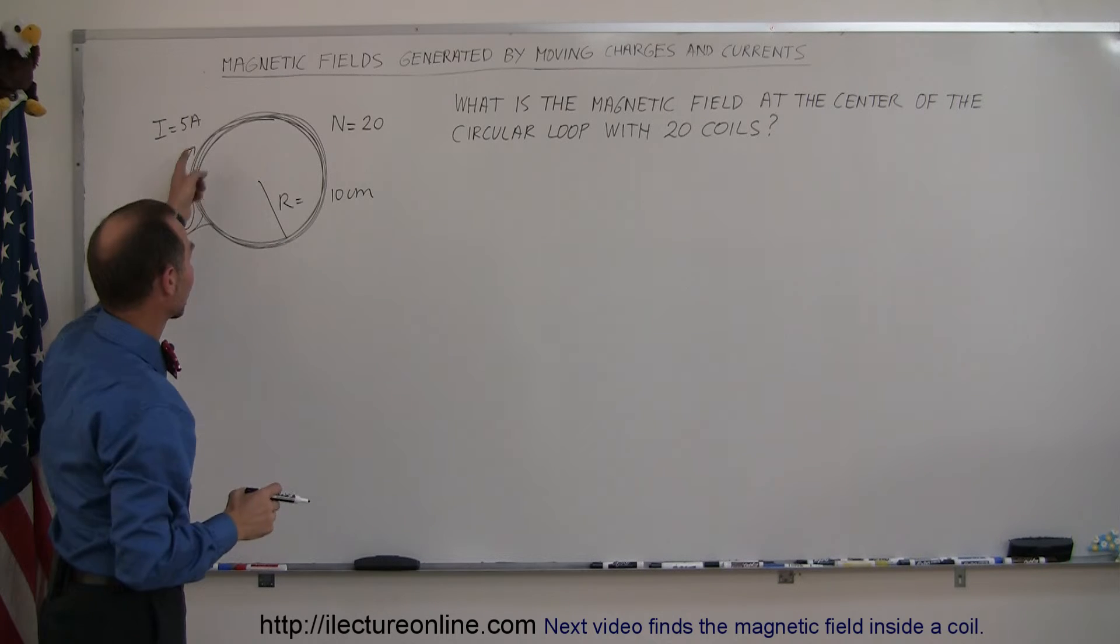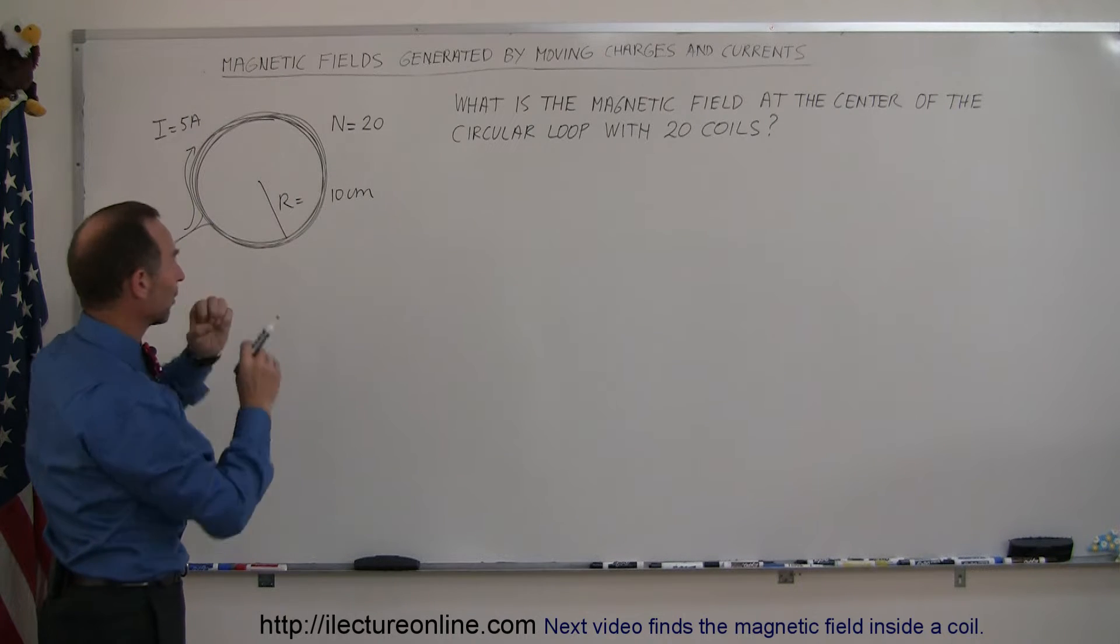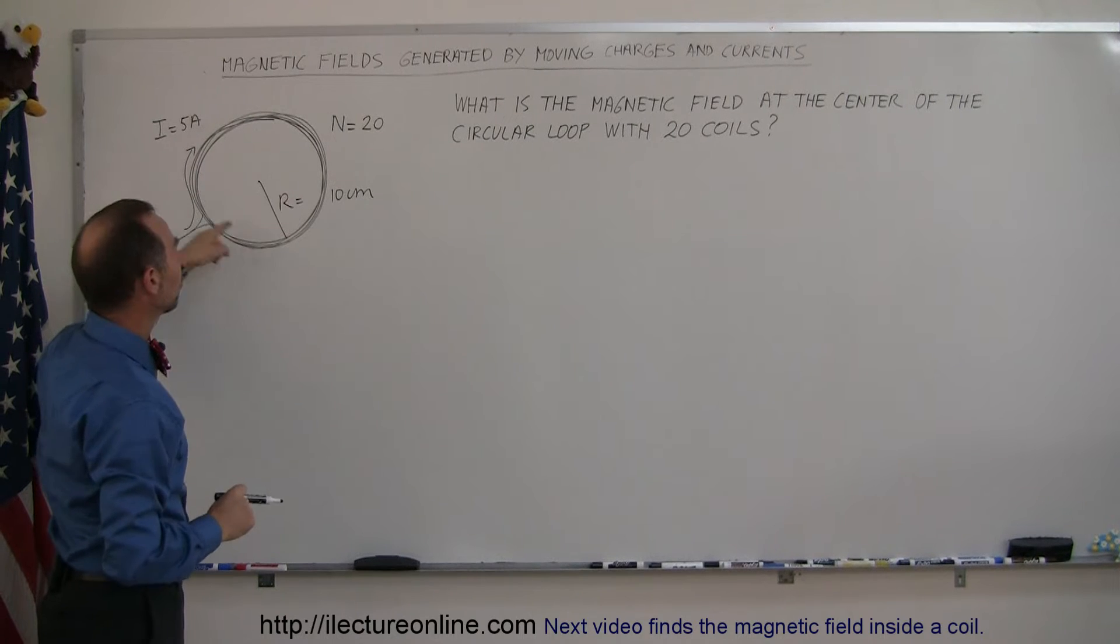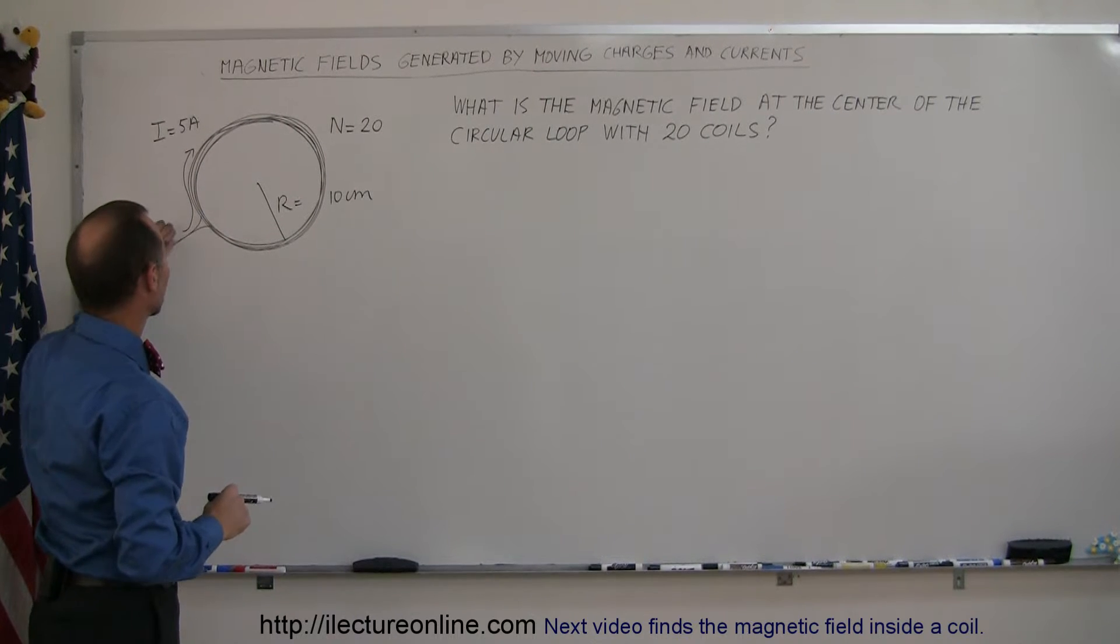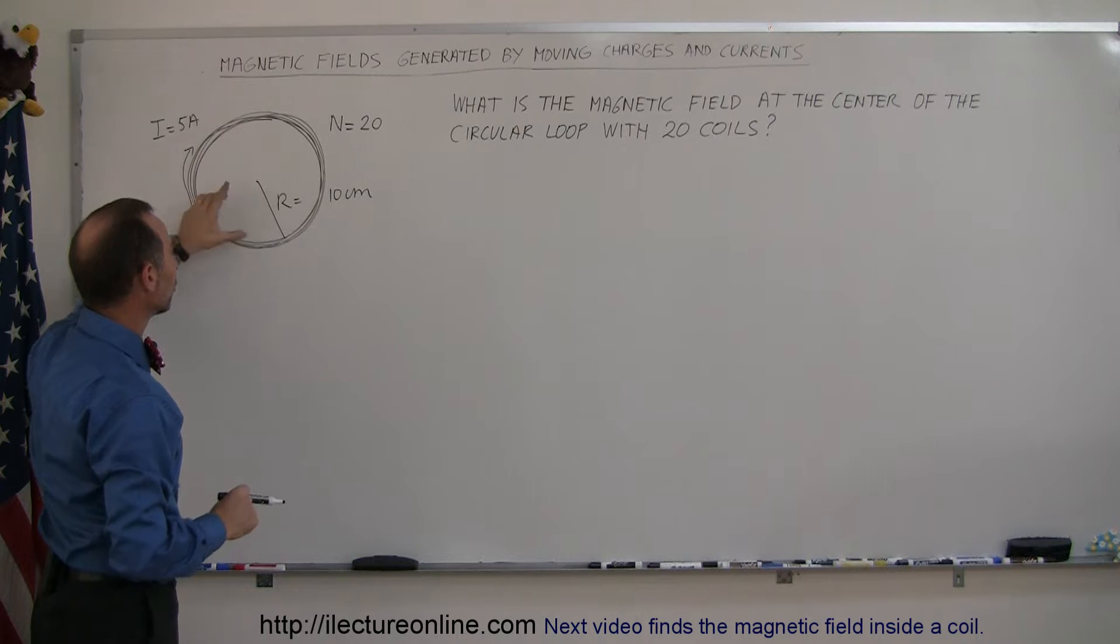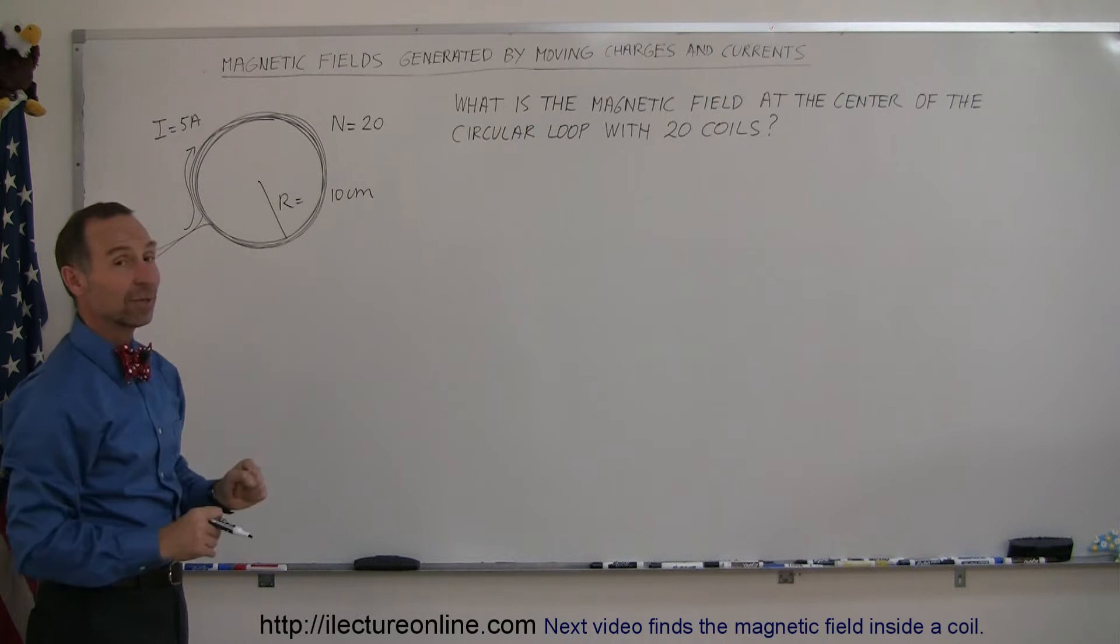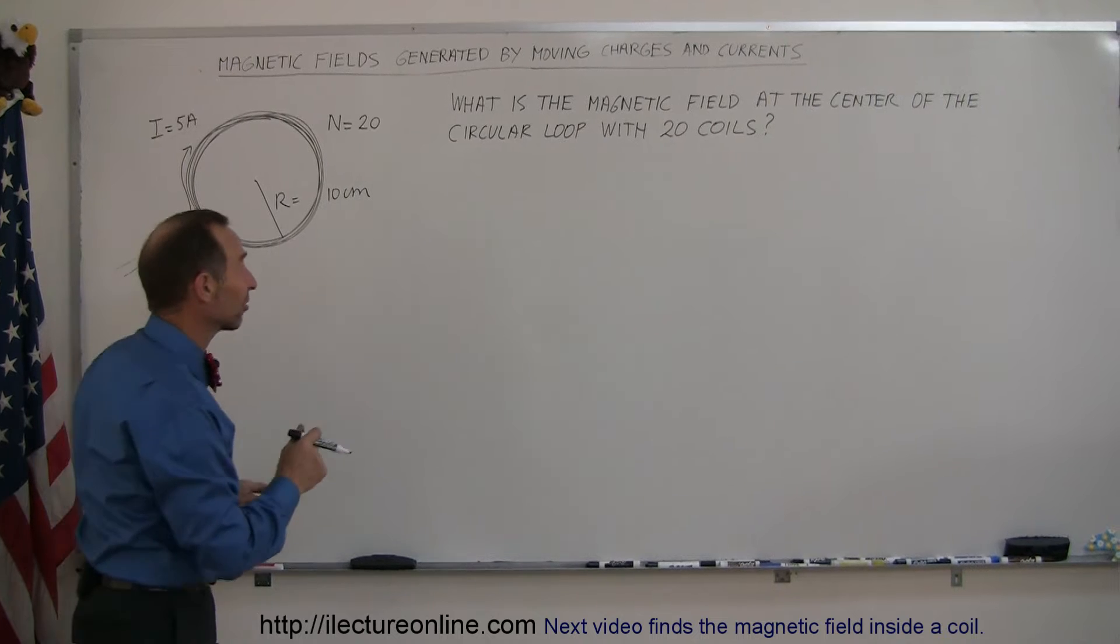Now this particular current loop is made up of wires coiled up very tightly bound in a single little bundle and there's 20 loops all connected together and a current of 5 amps going through the loops. The radius of this loop is 10 centimeters. So what's the magnetic field at the center?